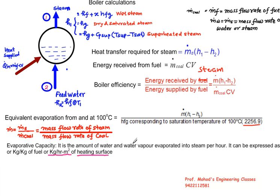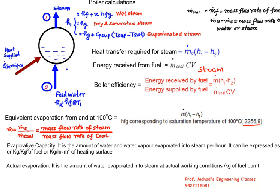Evaporative capacity is the amount of water and water vapor evaporated into the steam per hour. It can be expressed as kg per hour, kg of kg of fuel, kg per hour meter square of heating surface. Actual evaporation is defined as the amount of water evaporated into the steam at actual working condition per kg of fuel burn. These are the measures of boilers and boiler efficiency we do for performance. To compare the different boilers we are using equivalent evaporation or actual evaporation.